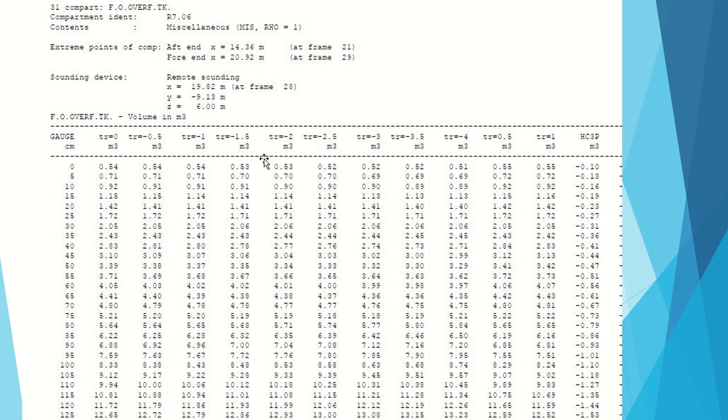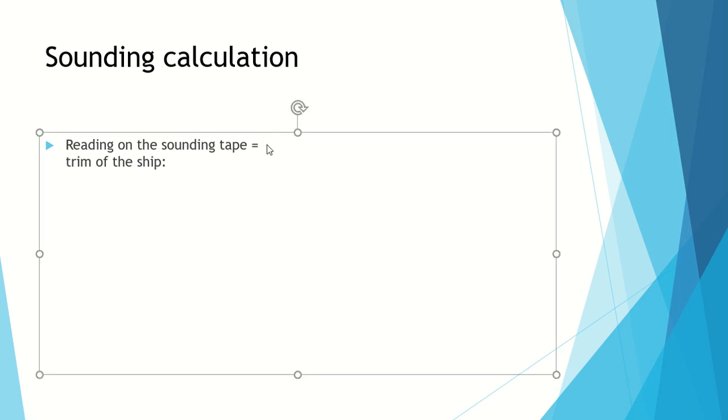Now let's do some calculations. Suppose we get 70 centimeters in our sounding tape. So 70 centimeters, and we'll take the trim of the ship as even keel, so trim equals 0.